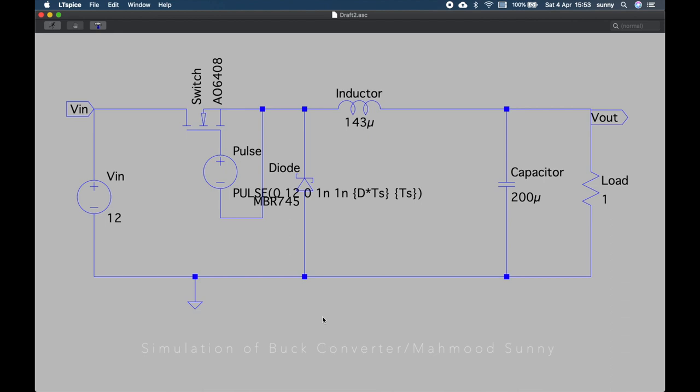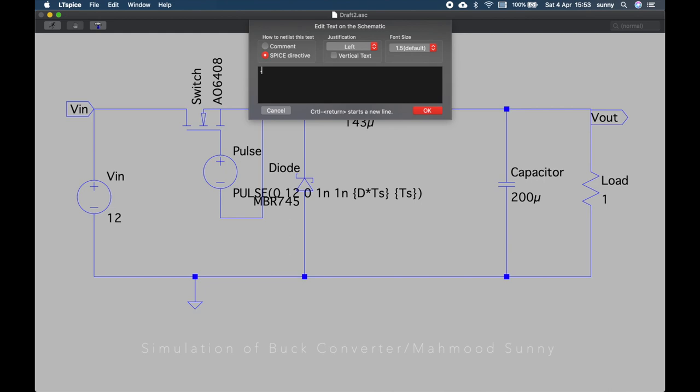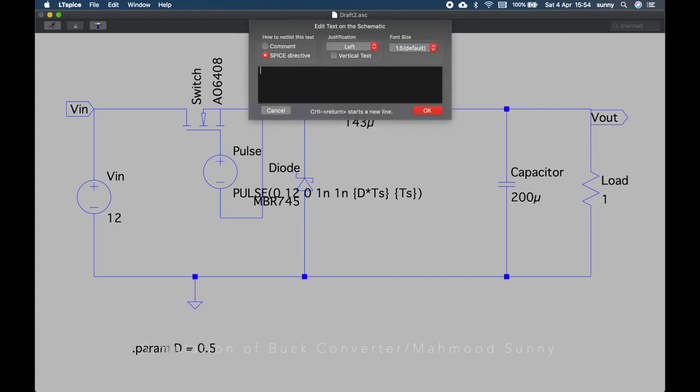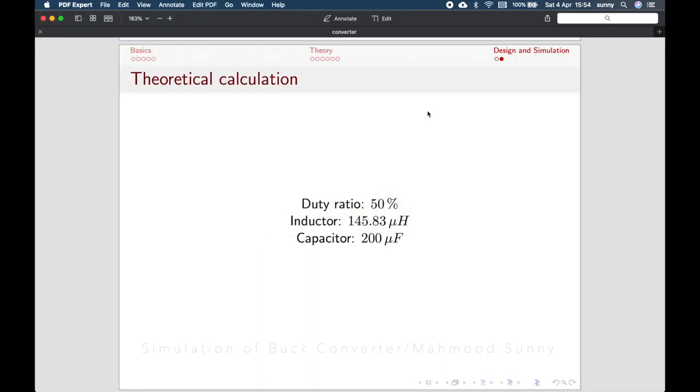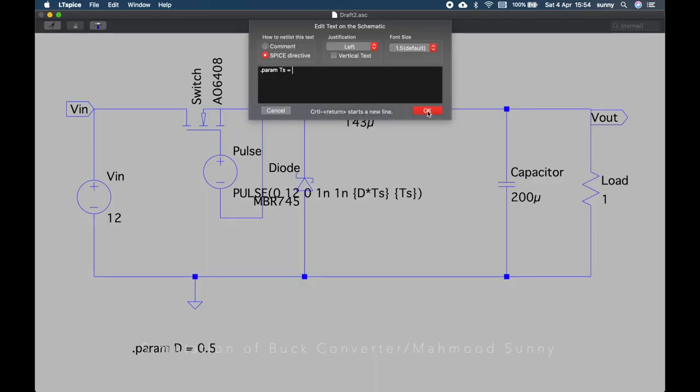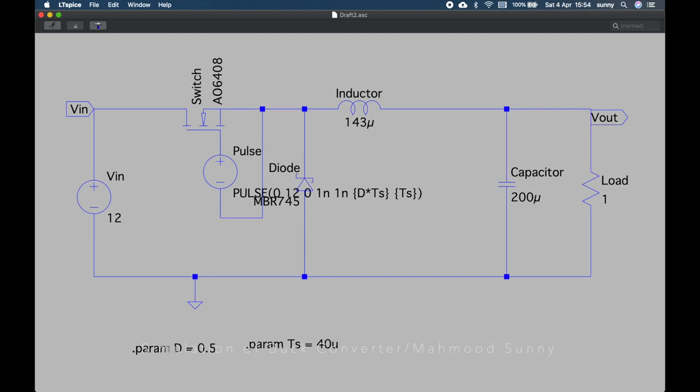Our circuit construction is more or less complete. Now, we need to set the spice directives. To get the spice directive menu, you just need to press S on your keyboard. First, we will define parameters, dot param. The first parameter would be the duty ratio D, which should be 0.5. Next, our switching period. Our switching frequency was 25 kilohertz, which means that we can get the period if we take the inverse of this value. It would be 40 micro.